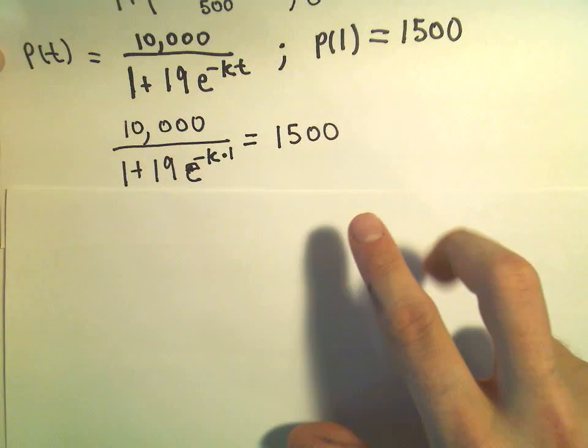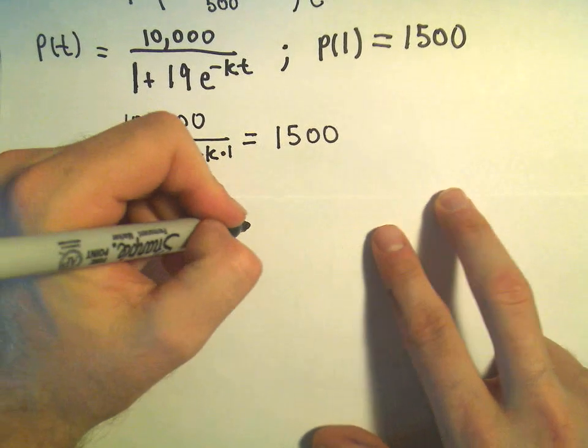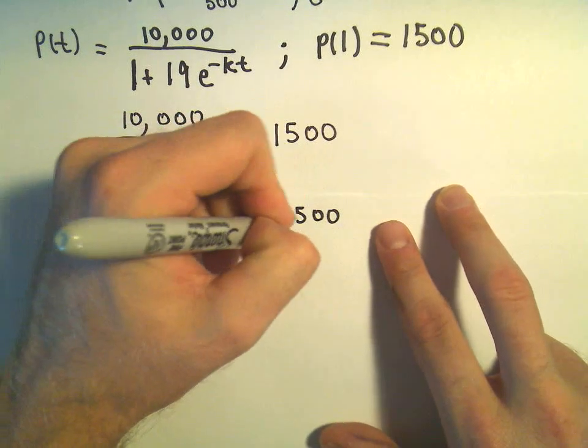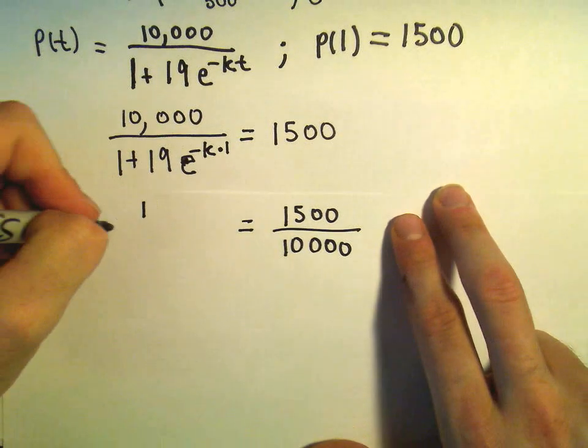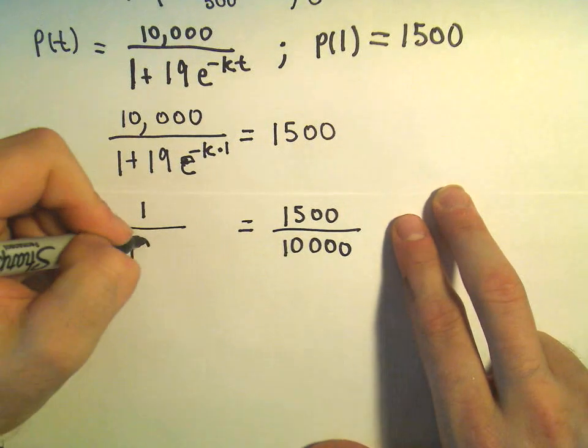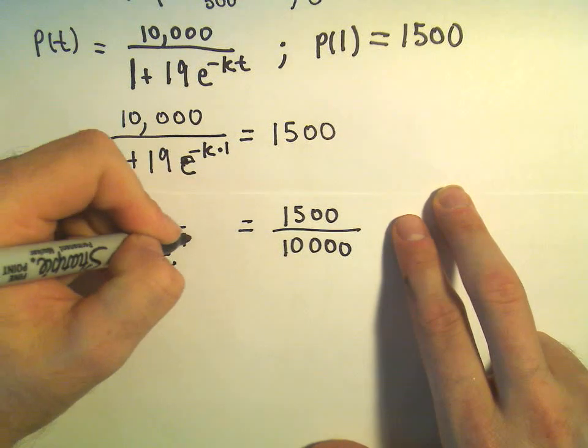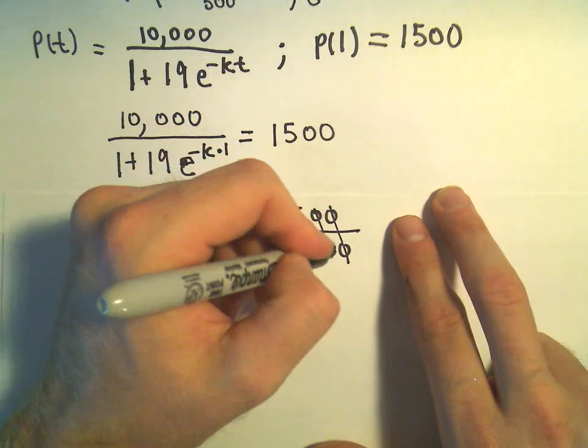So the first thing I would probably do is divide both sides by 10,000, so we would get 1,500 over 10,000. On the left side, we would have our 1 over 1 plus 19 times e to the negative k. We can cancel out some zeros.